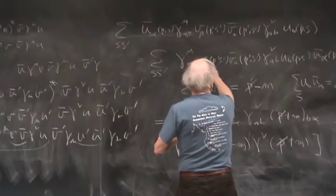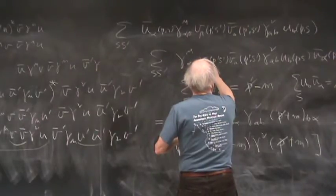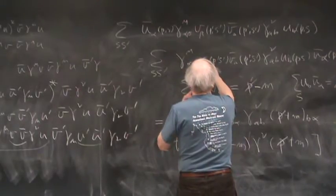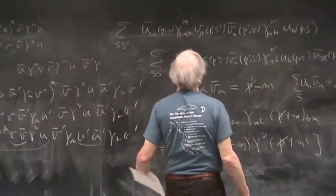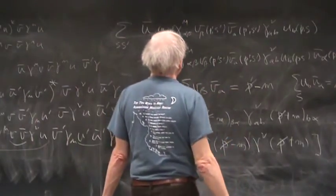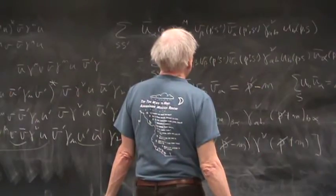Alright. Okay, so we've done the incoming spinors. At least we've reduced them to a trace. The outgoing ones, what do they look like? Well the outgoing ones are ū γ^ν v times the complex conjugate of that.